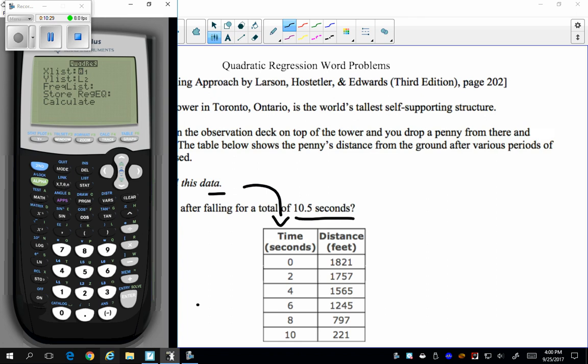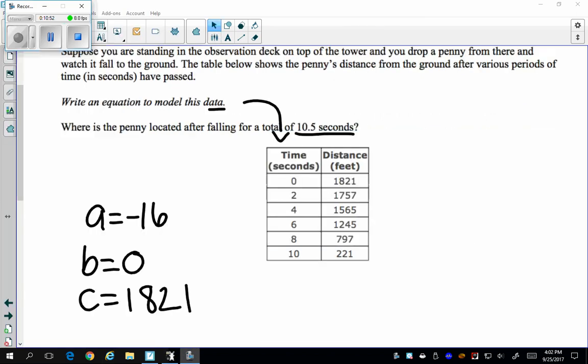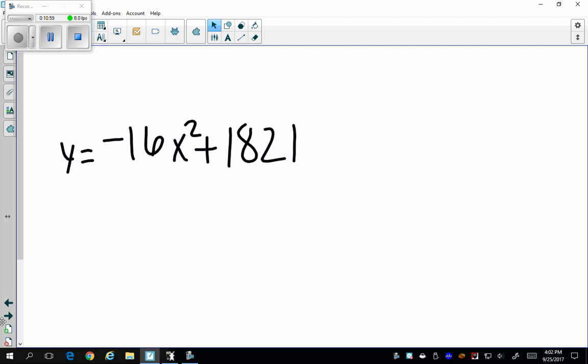My x list is list number one. So it's set in super nice. Y list is list number two. And that's the only thing I have to worry about. I'm just going to press calculate next. Then it gives me this format. It says y equals ax squared plus bx plus c, where a is negative 16, b is zero, and c is 1821. So now I'm just going to write it down, a equals negative 16, b equals zero, and c equals 1821. And I'm just going to write it as an equation now. Using the ax squared plus bx plus c form, I get y equals negative 16x squared plus 1821.